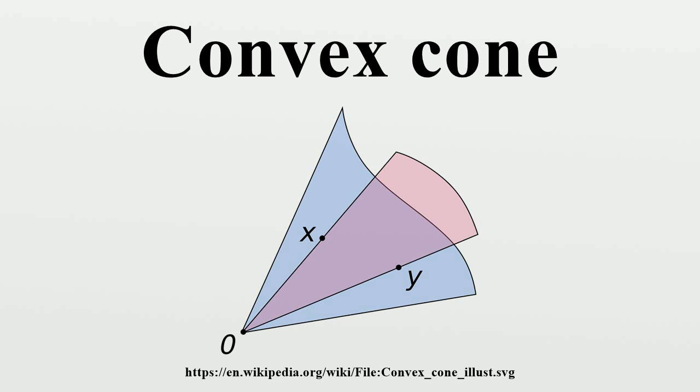Definition. A subset C of a vector space V is a convex cone if alpha x plus beta y belongs to C for any positive scalars alpha, beta, and any x, y in C. The defining condition can be written more succinctly as alpha C plus beta C equals C.